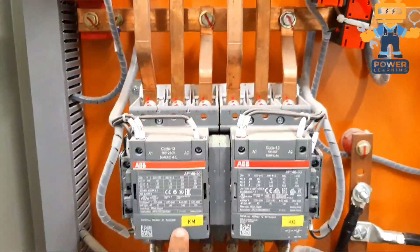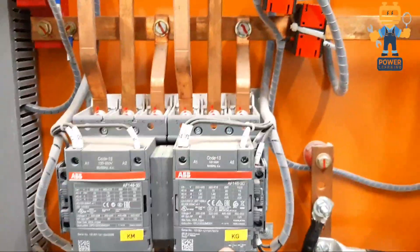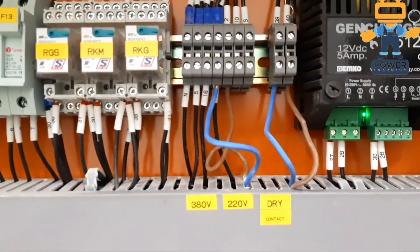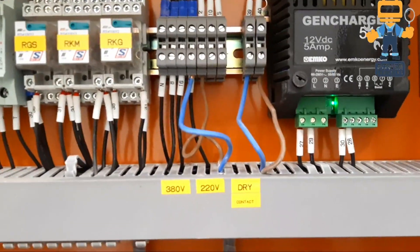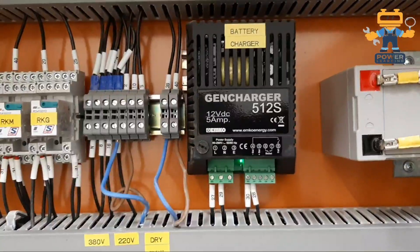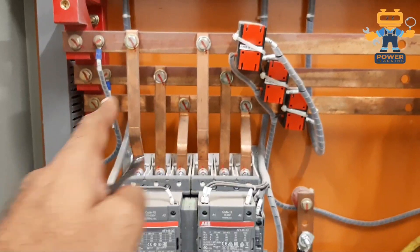RGS is remote generator start, RKM is relay for mains contactor, and RKG is relay for generator contactor. These are our connections. This one is 220 volt and other is dry contact for remote start. This is remote start. Here we have our battery charger and this is our battery.